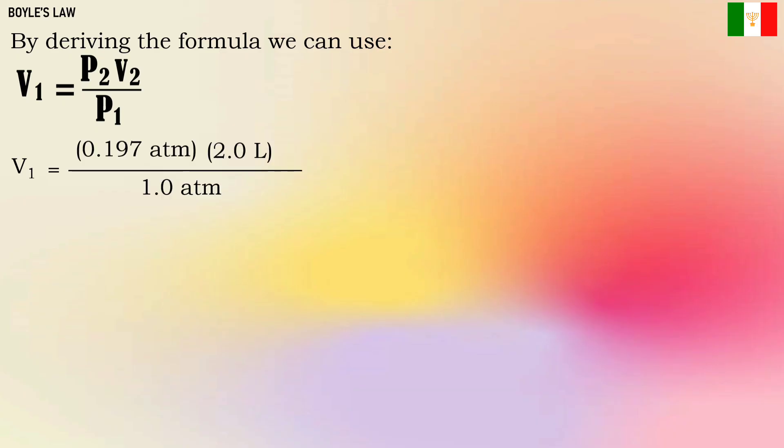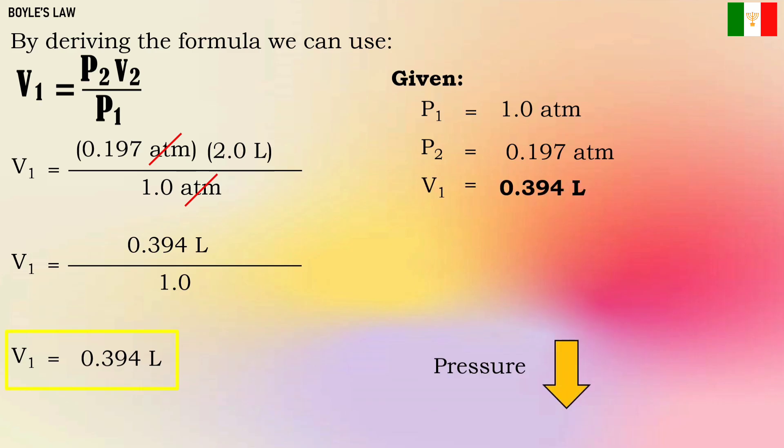Let's substitute. Don't forget to cancel the same units. Let's solve. 0.197 times 2.0, the answer is 0.394 liter over 1. The answer is 0.394 liter. Let's check if our answer is correct. According to the given, our pressure decreased. Our volume increased. Therefore, our answer is correct.